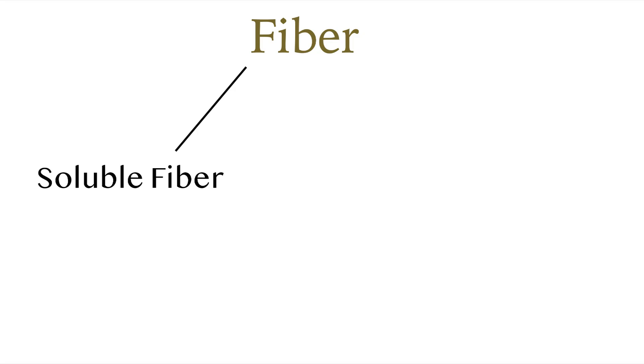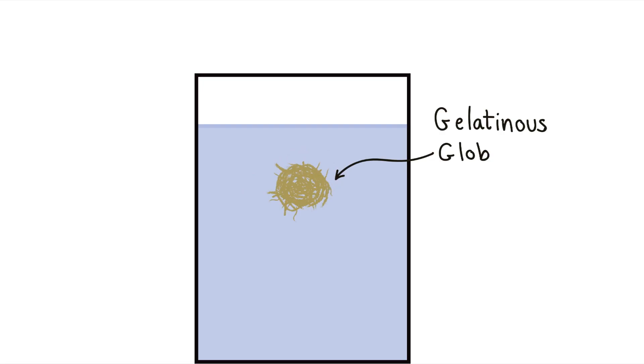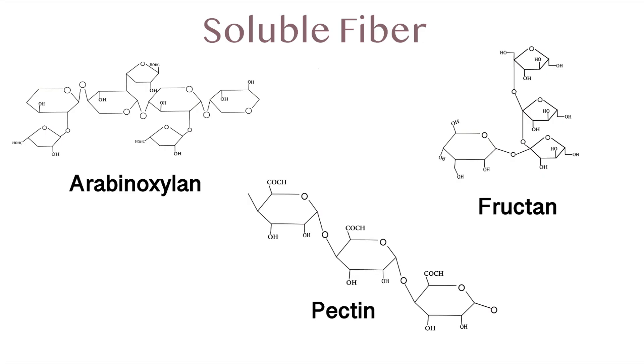Fiber comes in two flavors, soluble fiber and insoluble fiber. Soluble fiber is found in foods like oats, peas, carrots, barley, and fruit. When dissolved in water, it makes a sticky gelatinous material, hence it being soluble. Soluble fiber molecules include arabinoxalan, fructans, and pectin.